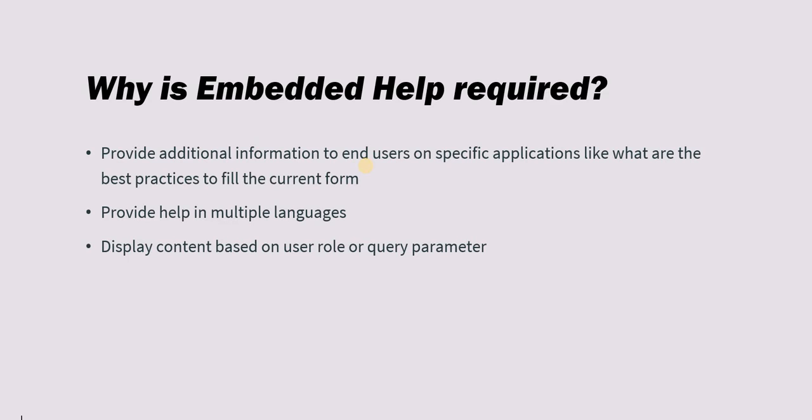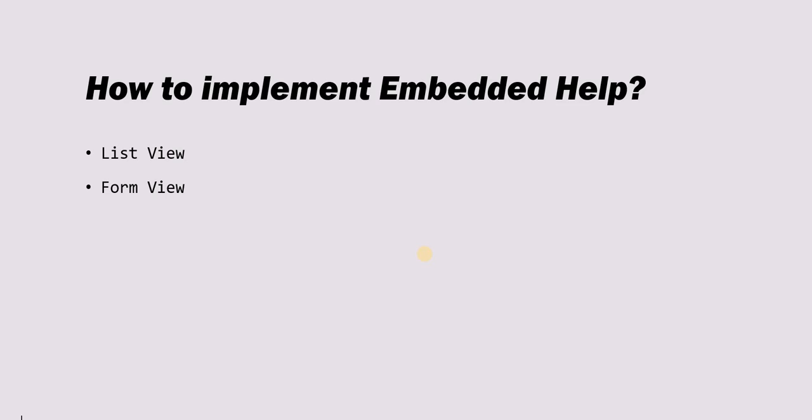Embedded help is required because we can provide additional information to end users on how to fill a form, if they have any doubt about a specific field. Secondly, you can provide help in multiple languages — you can paste Chinese, Japanese, or any language. Additionally, you can provide knowledge article links in the embedded help. You can also display content based on the role of the user — for example, different help for admins, ITIL users, incident managers, or major incident managers. Finally, using query parameters, you can display different help based on the URL query parameters.